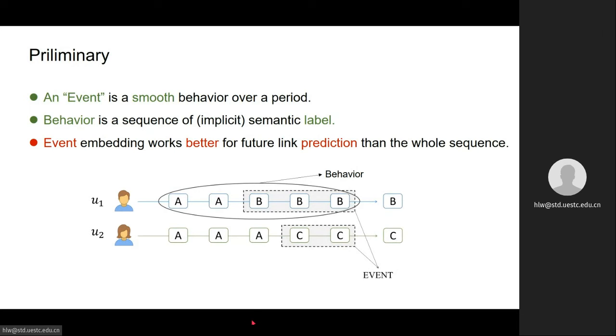For example, in this image below, A, B, and C denote the semantic label of users at different time steps. The most recent events in this image are shown in the dotted rectangle, and the whole behavior sequence is shown in the circle.